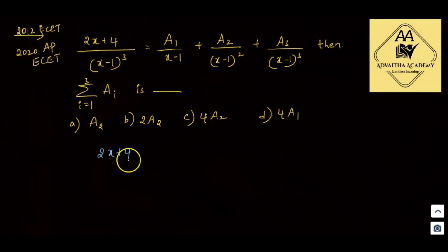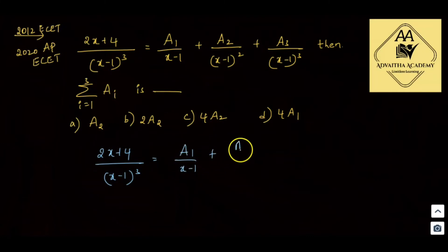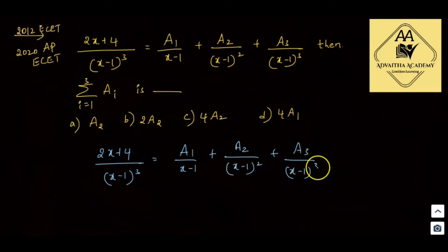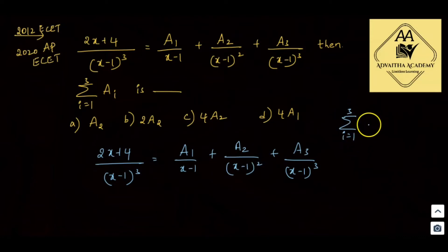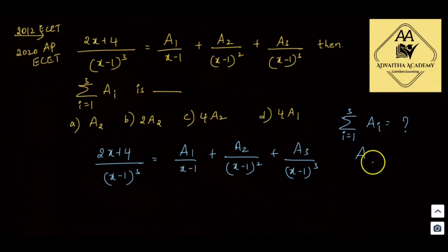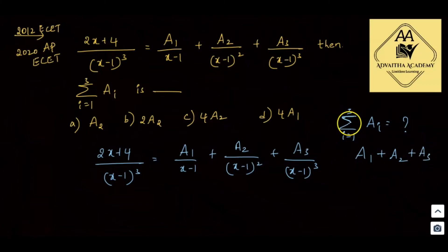Next question: (2x + 4)/(x - 1)³ = A1/(x - 1) + A2/(x - 1)² + A3/(x - 1)³. The question asks for the summation: A1 + A2 + A3, where i takes values 1, 2, 3. So summing Ai for i = 1, 2, 3 means A1 + A2 + A3.